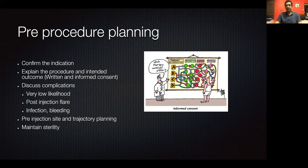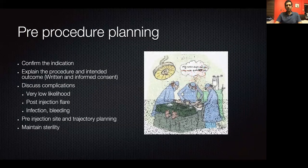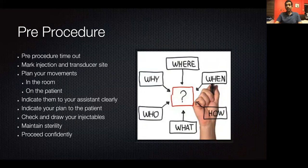Once you have a clear understanding with the patient, I do a pre-injection site and trajectory planning and maintain sterility. I do a pre-procedure timeout — injecting the patient on the correct side and location, pointing and asking where exactly the symptoms are. At the time of injection, I put the transducer over the target, identify it, and mark a point on the skin for my transducer position and needle entry site. I take time to plan my movements in the room and indicate to my assistant what I need, and I tell the patient what I'm going to do. Gaining patient confidence is very important with these procedures.